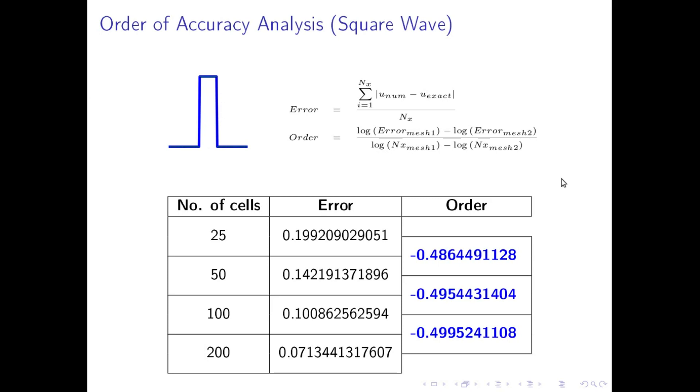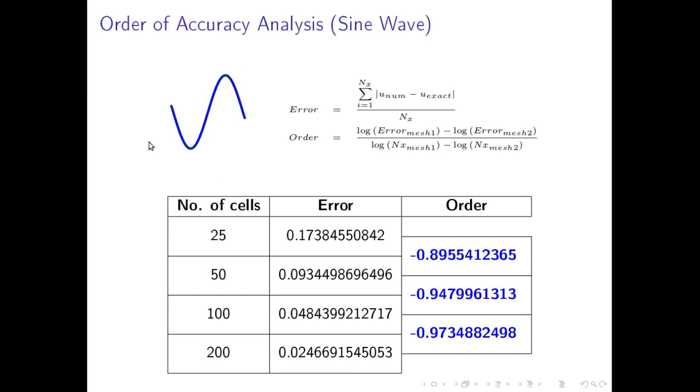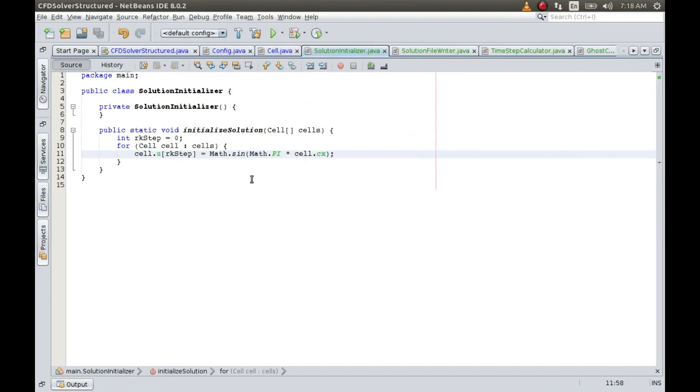So a better way is to look at the sine wave. So if we look at the sine wave and we look at how this solution progresses in time and then we compare the solution with the exact solution and we plot the order, then we can clearly see that the order goes close to 1, the order of accuracy goes close to 1, which is what we were expecting.